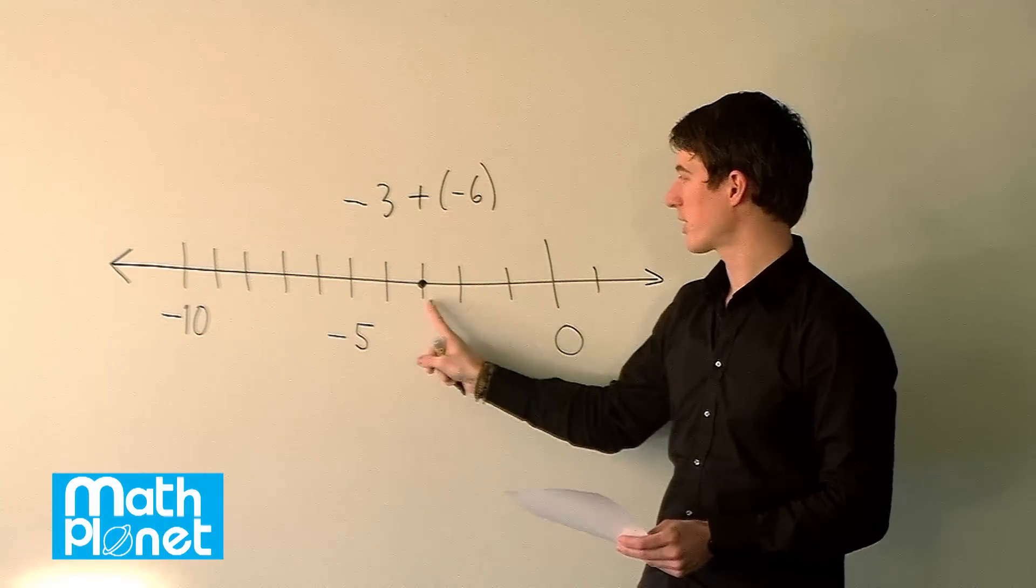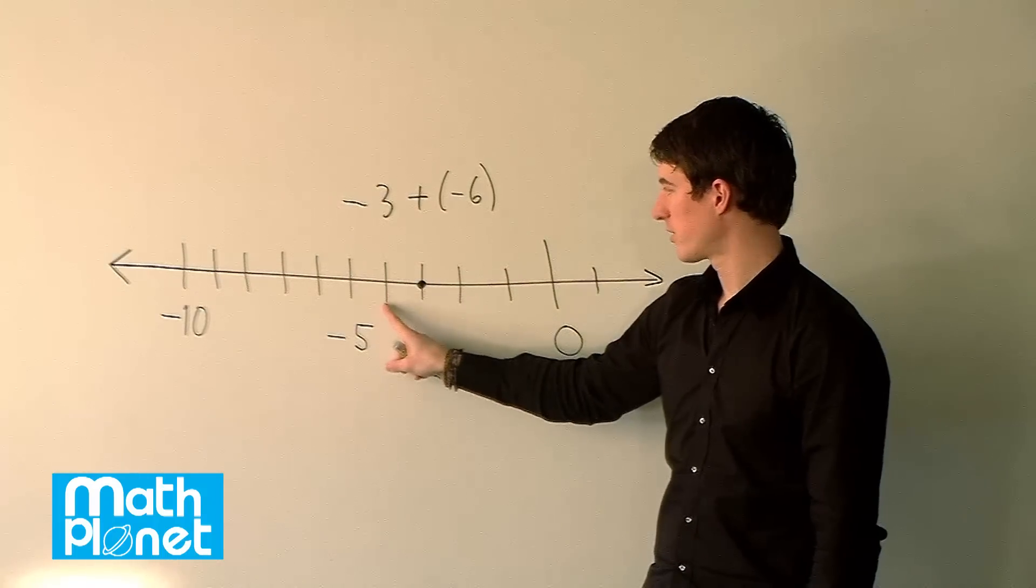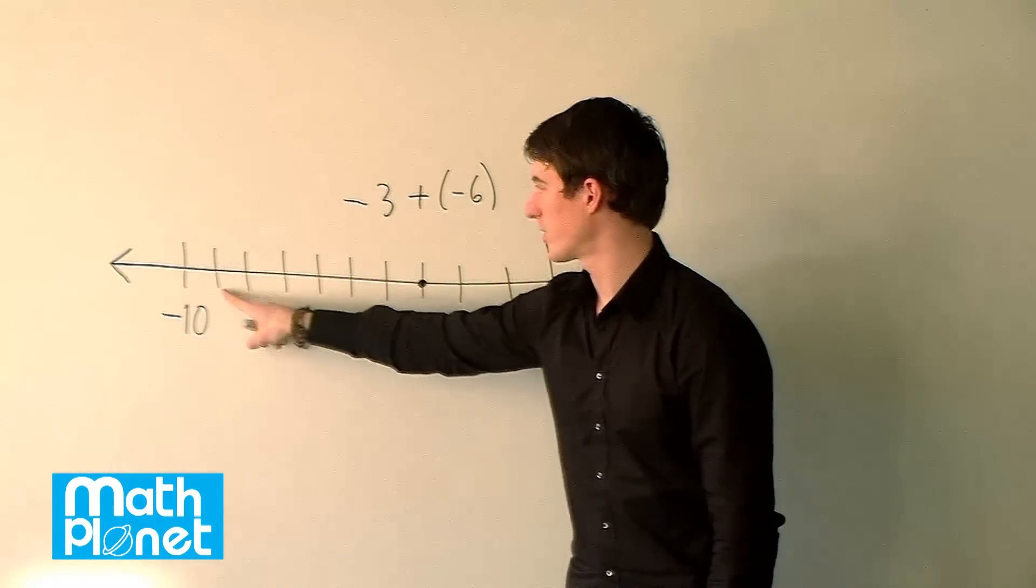So instead of going to the right 6, we go to the left 6. So from negative 3, 6 more: 1, 2, 3, 4, 5, 6.